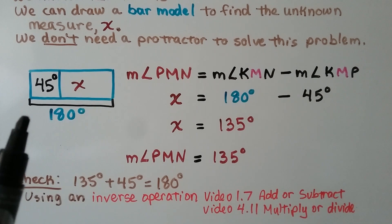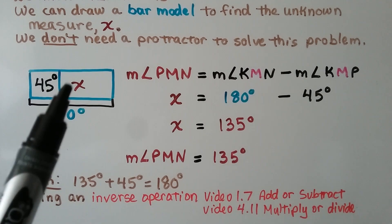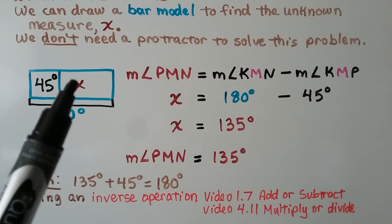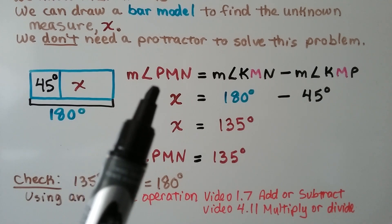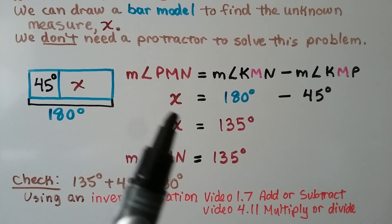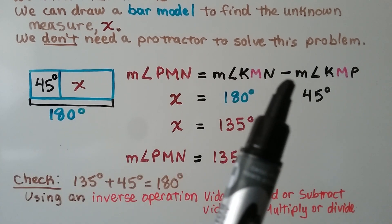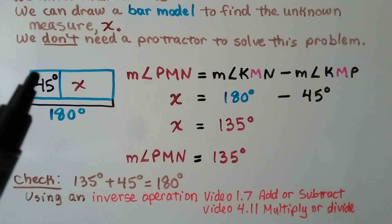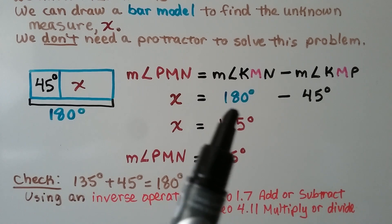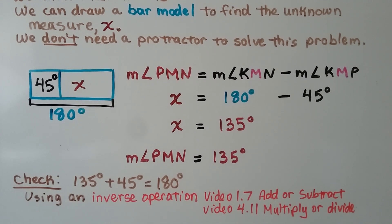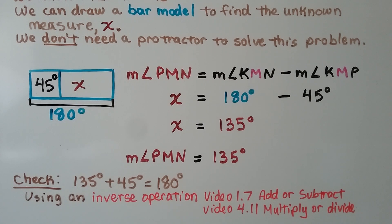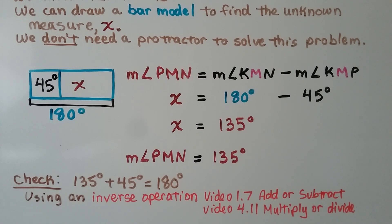The entire angle is 180 degrees; we know part of it is 45 degrees, and we're looking for the unknown angle measure x. The measure of angle PMN is x, and it's equal to the measure of angle KMN — the whole straight angle — minus the measure of angle KMP, this 45 degrees. So x equals 180 degrees minus 45 degrees, which equals 135 degrees. The measure of angle PMN is equal to 135 degrees. We can check our work: 135 degrees plus 45 degrees equals 180 degrees, so our answer makes sense.